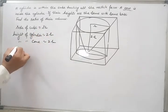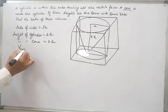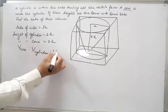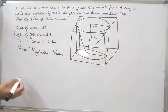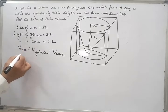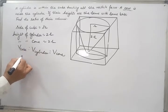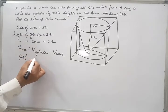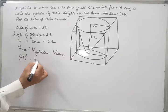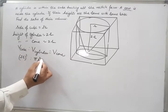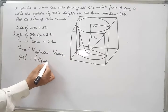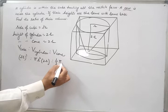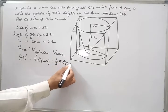We have to find the ratio: volume of cube : volume of cylinder : volume of cone. Volume of cube is side cubed, which is (2r)³. Volume of cylinder is πr²h = πr²(2r). Volume of cone is (1/3)πr²h = (1/3)πr²(2r).